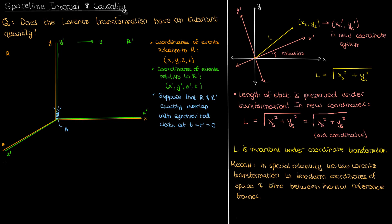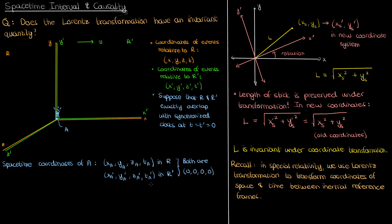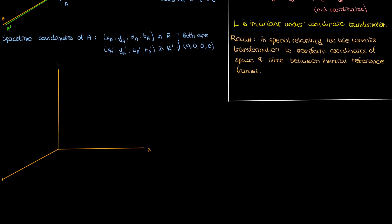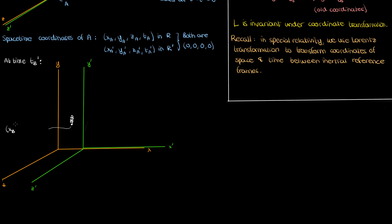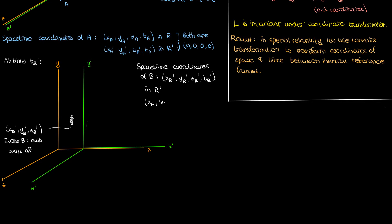When these reference frames align with synchronized clocks, suppose a light bulb turns on at time zero with spatial coordinate zero relative to both reference frames. I'll call this event A, with coordinates (xA, yA, zA, tA) according to R, and (x'A, y'A, z'A, t'A) according to R'. These coordinates are all zero because the light bulb turns on at time zero at the origin when both frames are lined up. Next, suppose that at some time t'B according to R', the light reaches coordinates (x'B, y'B, z'B) and turns off — I'll call this event B. The spacetime coordinates of event B according to R' are these primed coordinates with subscript B, and according to R they are the unprimed coordinates.